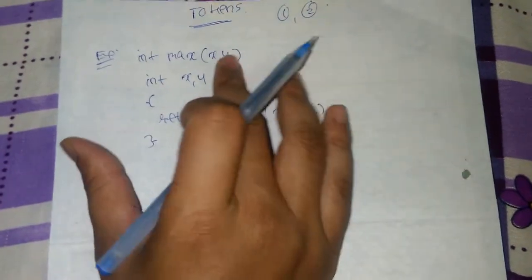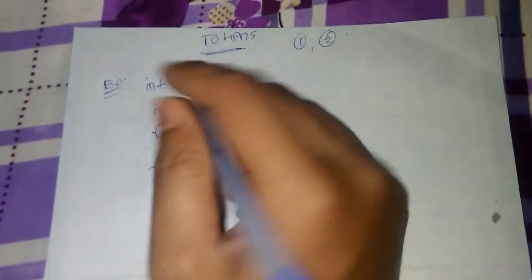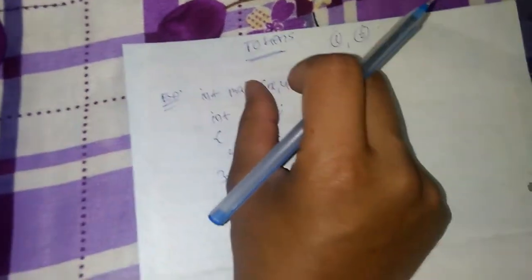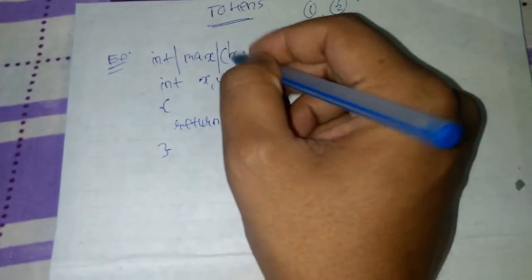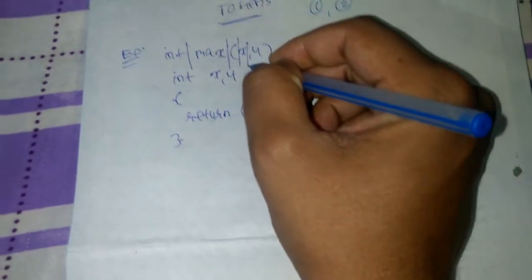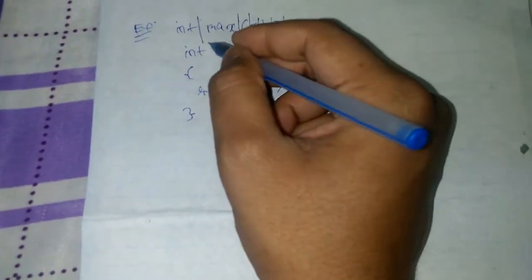Basically, in order to find the number of tokens, what we have to do is that we have to separate each and every word or symbol into different parts. We will separate int, max, curly braces, x, then comma y, close brackets.